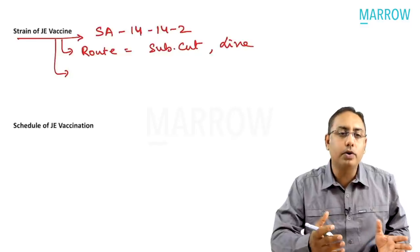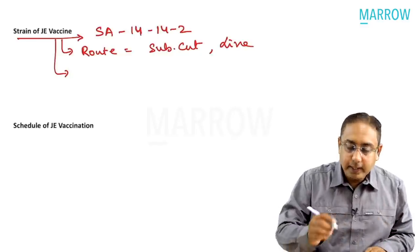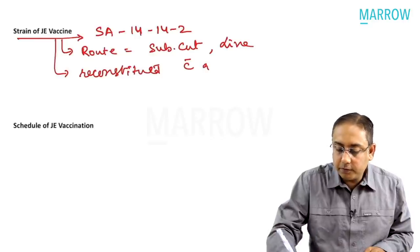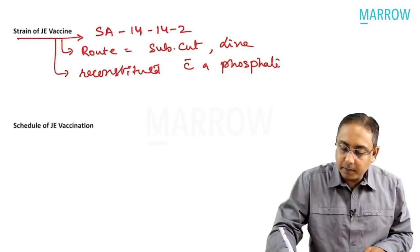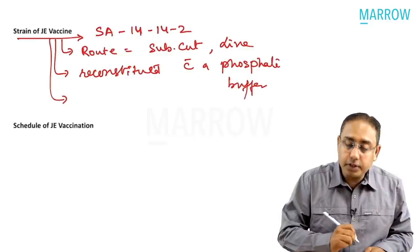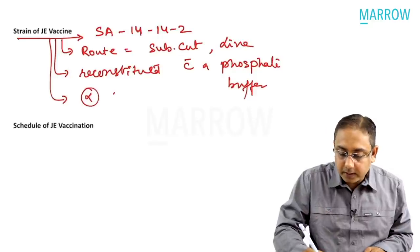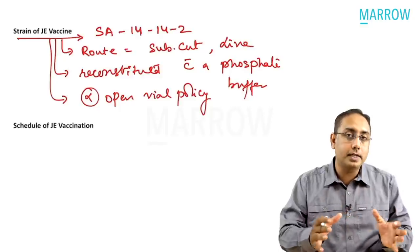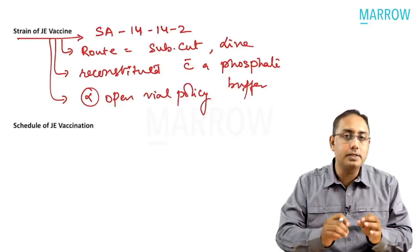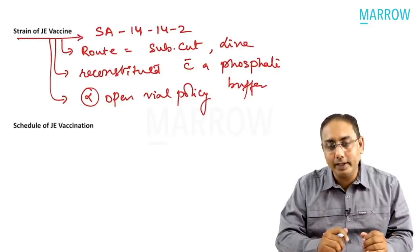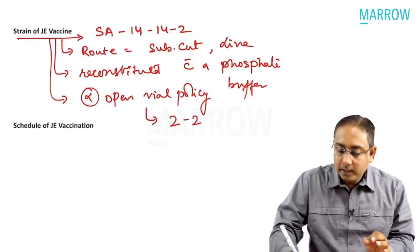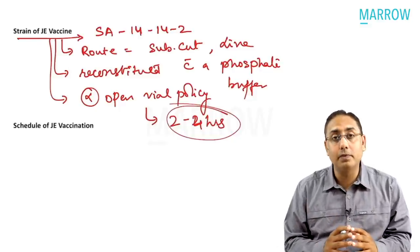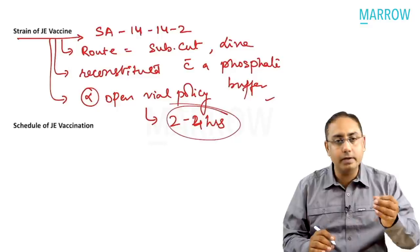The SA 14-14-2 Japanese encephalitis virus vaccine has to be reconstituted with a phosphate buffer. Because it is reconstituted, it does not follow the open vial policy. Normally all vaccines can be kept up to 28 days, but the JE vaccine, once opened and reconstituted, cannot be kept for 28 days. It has to be used within 2 to 4 hours - that is the maximum shelf life after reconstitution.